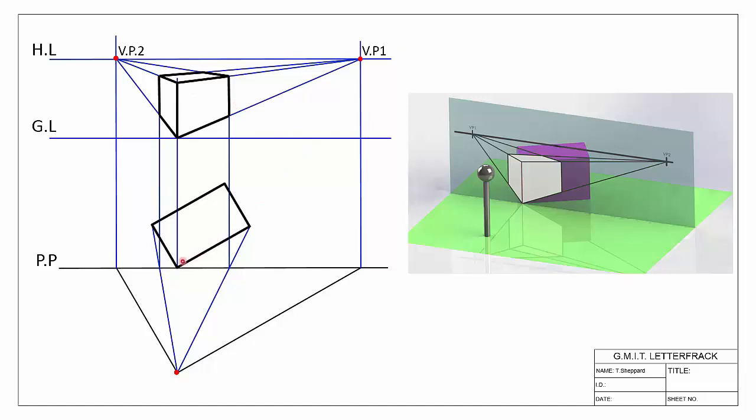That's our two-point perspective. The difference is the number of directions we have for the object — more than one direction means more than one vanishing point. The number of directions determines the number of vanishing points: two directions gives two vanishing points, three gives three, and so on. Hopefully this has been of some use to you — keep looking at the videos, thank you.